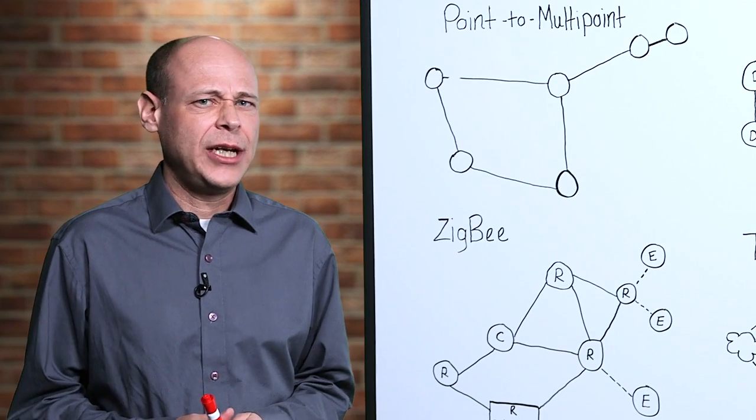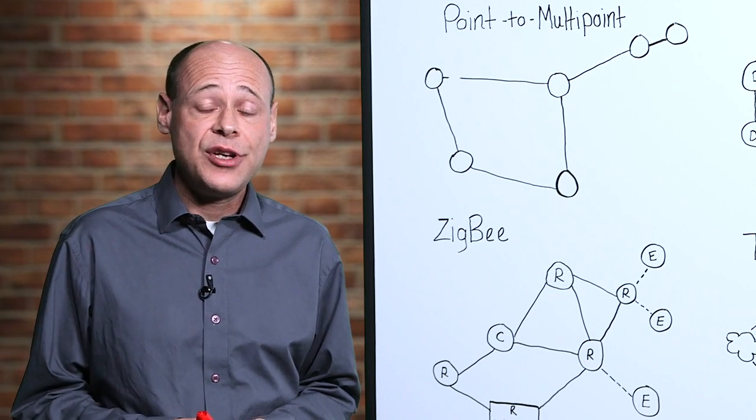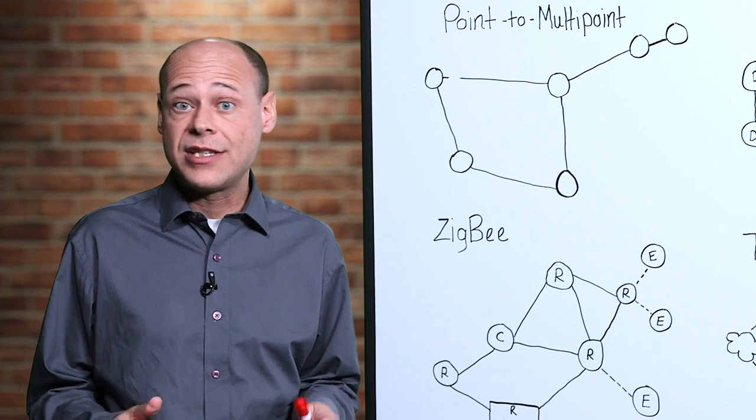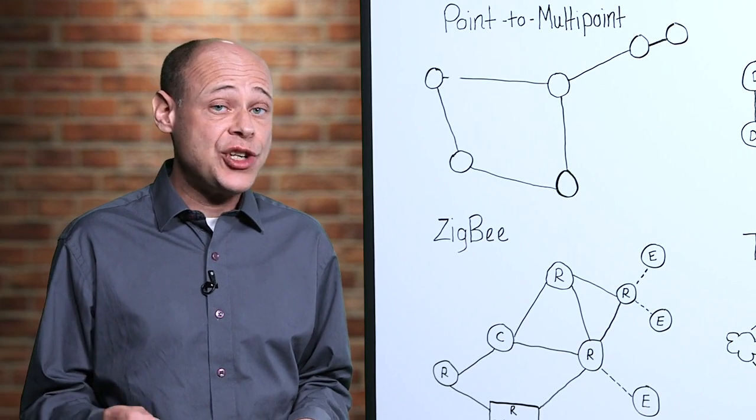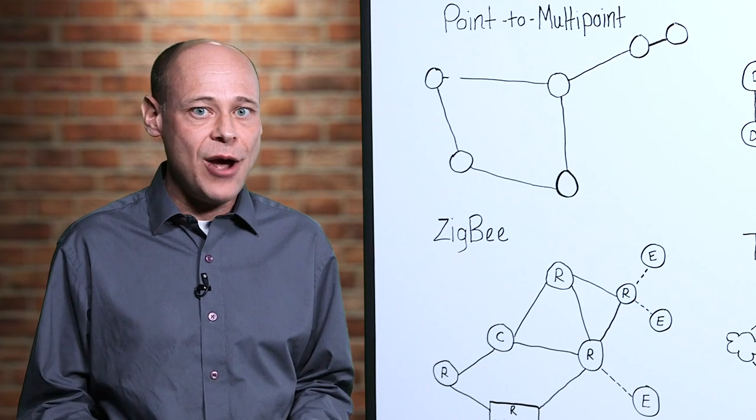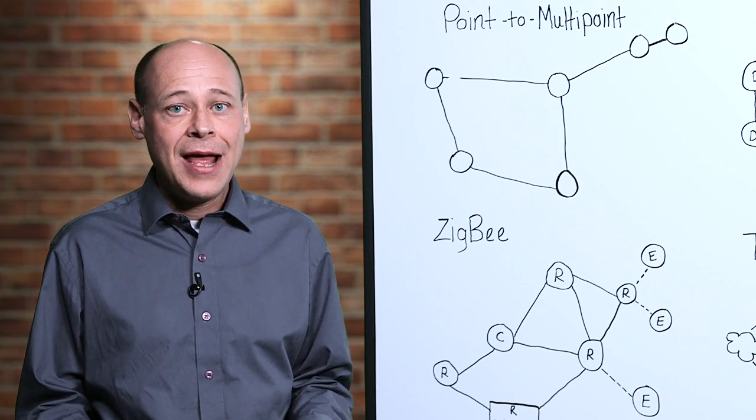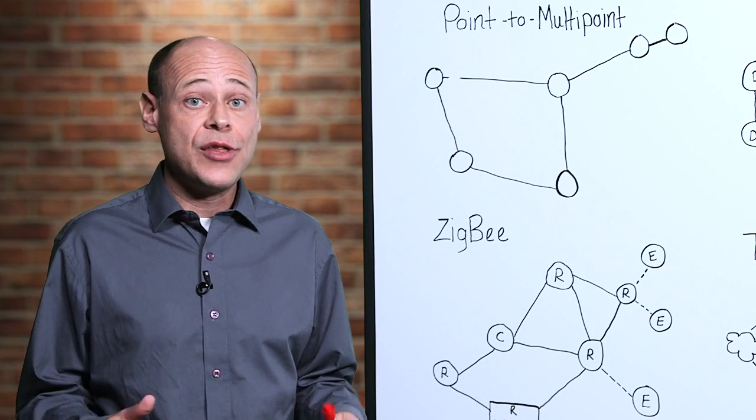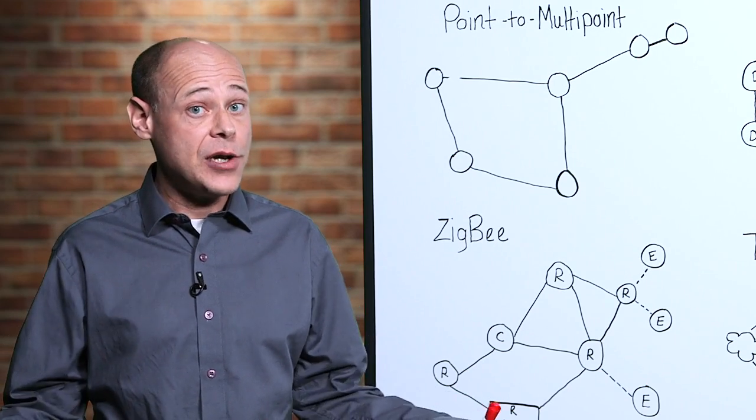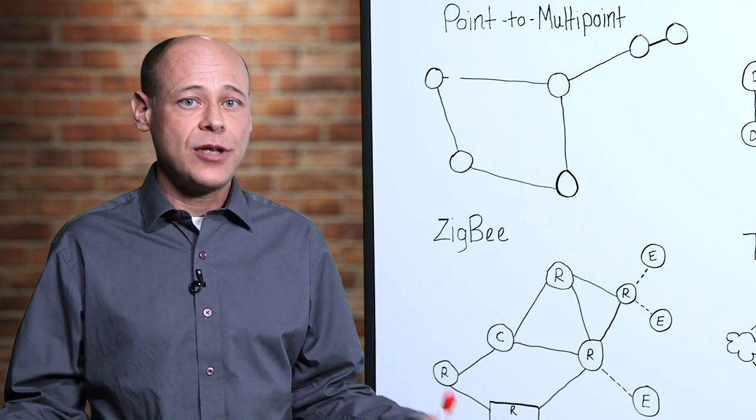So what is mesh networking? Mesh networking allows you to extend the reach of your Internet of Things device network by allowing each device or node on your network to act as a router. Data can then hop from node to node so that radios which are too far apart to hear each other directly can still communicate.